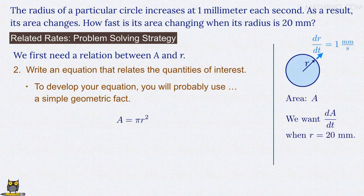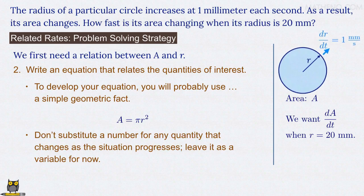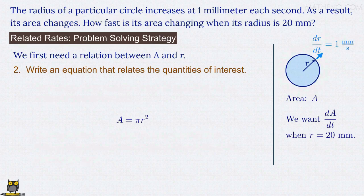Now, a common mistake at this point is to substitute 20 millimeters for r, but you can't proceed correctly if you do that. Instead, because the value of the radius changes as the circle grows, we have to leave r as a variable for now. We'll substitute r equals 20 millimeters at the end of our solution. The equation A equals pi r squared actually completes the second step of our problem-solving strategy, since that's the relation between A and r that we need.